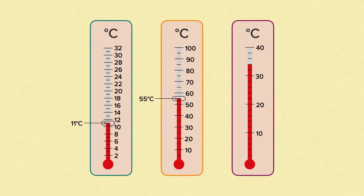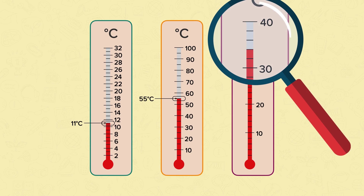The final thermometer goes up in tens, but each 10 is split into five small parts. Can you work out what each little line on the scale goes up in? As 10 is split into five equal parts, this means that each part is worth 2. So if we count up to the red line in twos from 30, we have 32, 34. The temperature is 34 degrees Celsius.